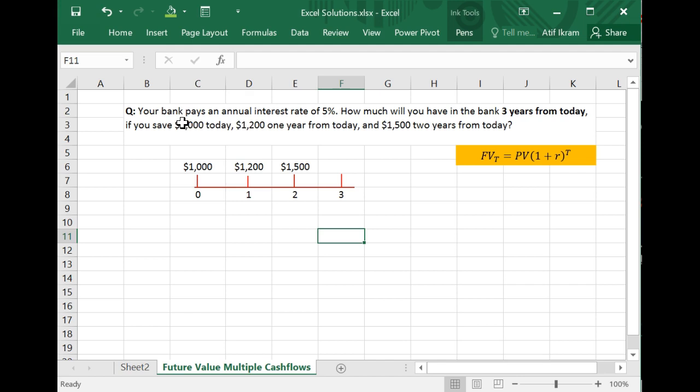Let me illustrate using an example. Let's suppose that your bank is paying an annual interest rate of 5%. The question is how much will you have in the bank three years from today if you save $1,000 today. So that's what you deposit today. Then one year from now you're going to deposit another $1,200 and then $1,500 two years from today.